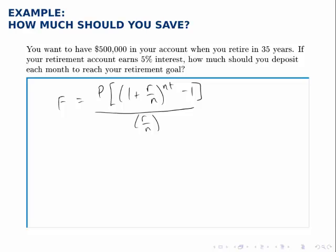It's the same formula we've used before for savings annuities. The difference now is that we're given the lump sum we want to have at the end. In other words, we're given F and we're asked to find the deposit amount, P.